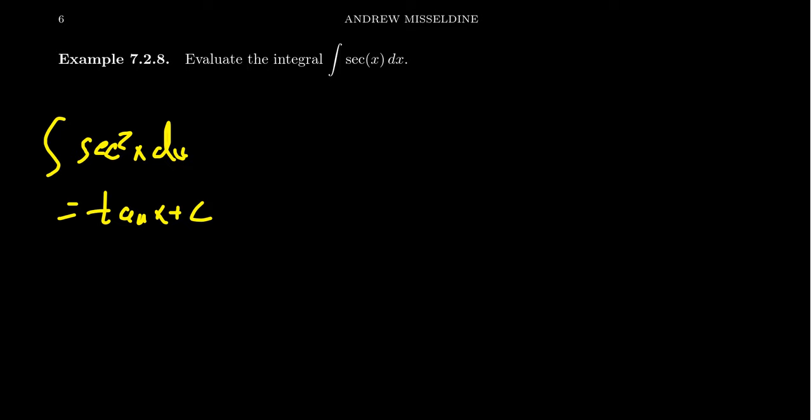But if you have just a secant, what do you do? Because we can't really utilize a Pythagorean identity because we need at least a secant squared. Otherwise, square roots get into the game and that's not going to help us at all.